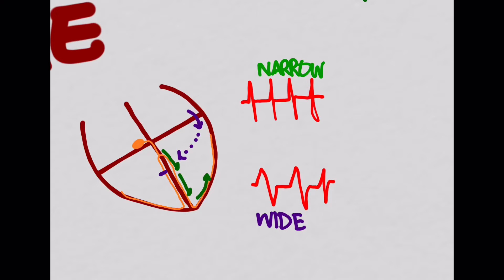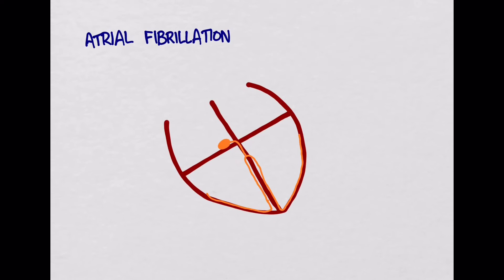The most common kind of supraventricular tachycardia is sinus tachycardia, but that's not pathologic. That tends to be due to some normal cause. The most common pathologic cause of supraventricular tachycardia is atrial fibrillation.